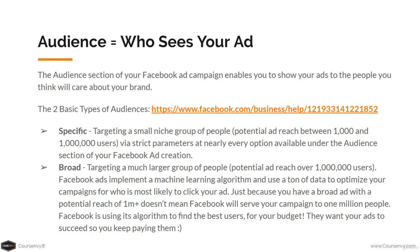There are two basic types of audiences. First, specific — targeting a small niche group of people with a potential ad reach between 1,000 and 1 million users, created via strict parameters across nearly every option in your audience section. The second type is broad — targeting a much larger group with a potential reach of 1 million plus users. Facebook's machine learning algorithm uses a ton of data to optimize your campaigns for who is most likely to click your ad, based on your budget.